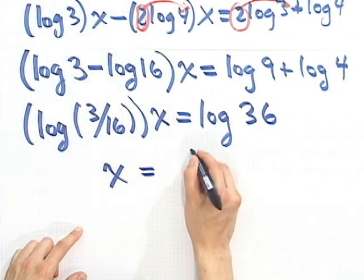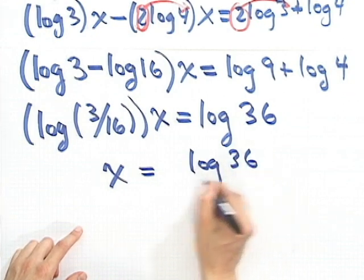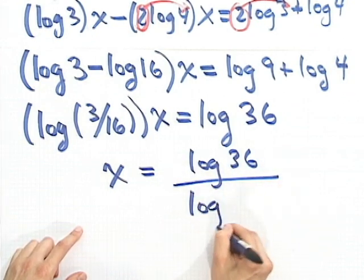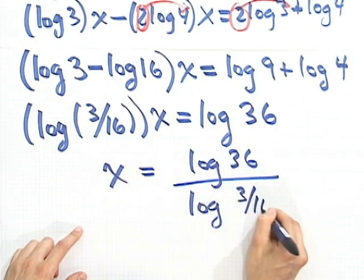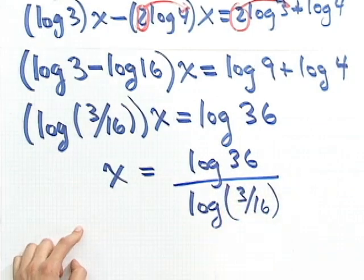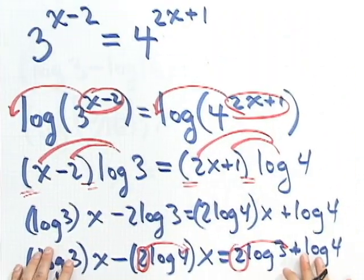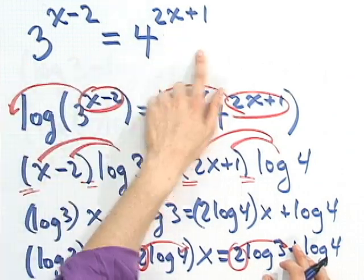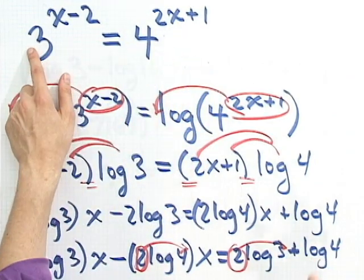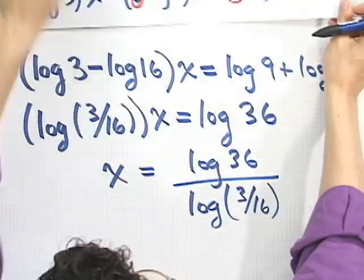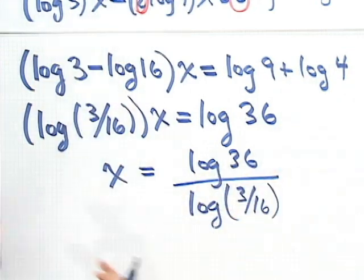equals log 36 divided by log of 3 over 16. So that's the answer. What is the x that satisfies this? It turns out the answer is some exotic x. It's that. What does that equal numerically?